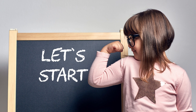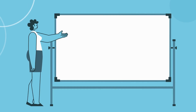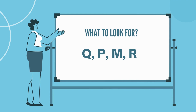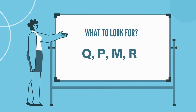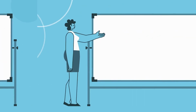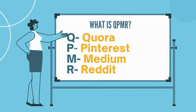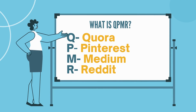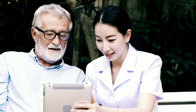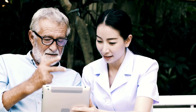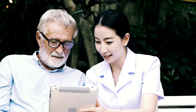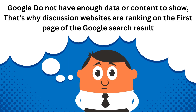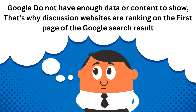Let's get started with the process of keyword research. I am using the Q, P, M and R method. Q is for Quora, P for Pinterest, M for Medium, and R is for Reddit. If you find any of these websites in the search results on the first or second page of Google, this means that Google does not have enough data or quality content to show. That's why Google is showing discussion or forum websites.